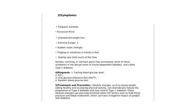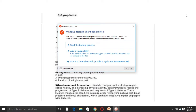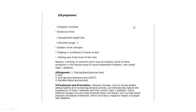Other diagnostic tests include the OGTT — Oral Glucose Tolerance Test — and a random blood glucose test. For treatment and prevention, changing lifestyle, eating healthy food, and increasing physical activity will reduce Type 2 diabetes and help control Type 1. Lifestyle changes can also minimize other risk factors such as high blood pressure and blood cholesterol.